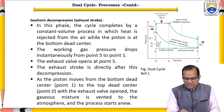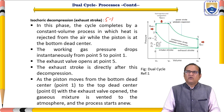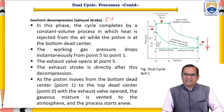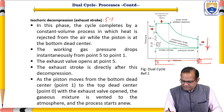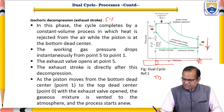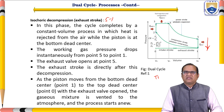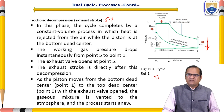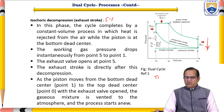Process five to one is isochoric decompression — the exhaust stroke. The cycle completes by a constant volume process in which heat is rejected from the air while the piston is at the bottom dead center. The working gas pressure drops instantly. The exhaust valve opens at state five, and the exhaust stroke follows as the piston moves from bottom dead center to top dead center with the exhaust valve open — the gaseous mixture is vented to the atmosphere and a new process begins.